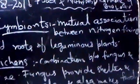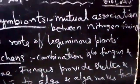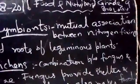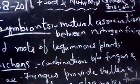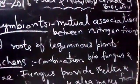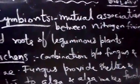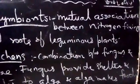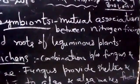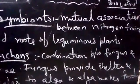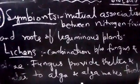Every cell contains nitrogen. There are amino acids and proteins in each cell, and the basic constituent is nitrogen. That is why nitrogen-fixing bacteria are so important.